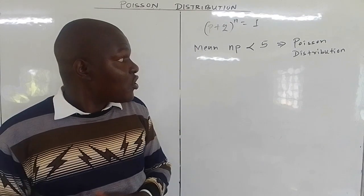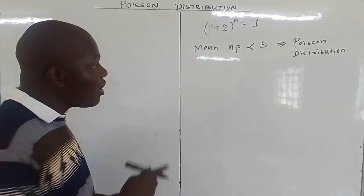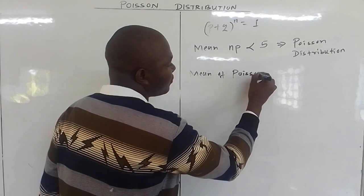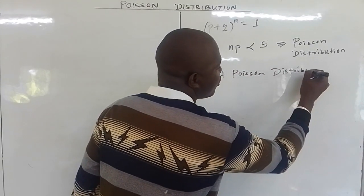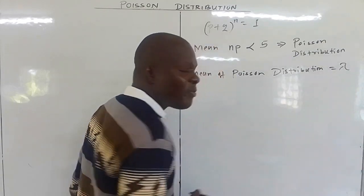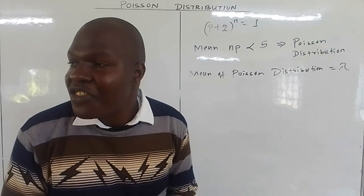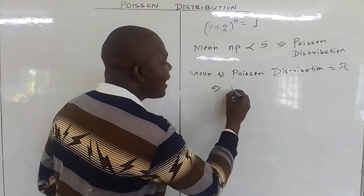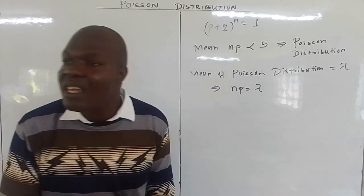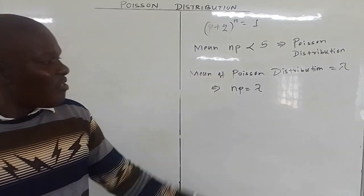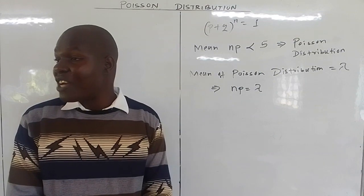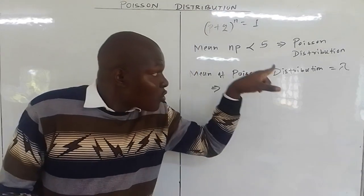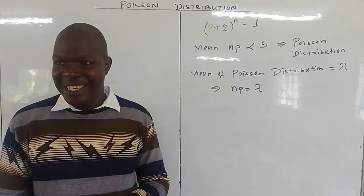The Poisson distribution uses an exponential function. The mean of a Poisson distribution is given by lambda. Since it is the same binomial distribution being approximated, the mean NP equals lambda — the mean of the binomial distribution equals the mean of the Poisson distribution.